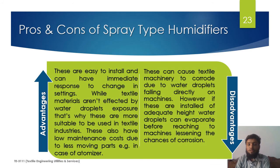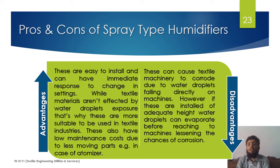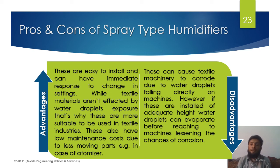Pros and cons of spray type humidifiers: the advantages are that they are easy to install, can change settings immediately, and have very low maintenance and operating costs. A major advantage is that textile materials are not affected by the water droplets, making them very suitable for textile units. The disadvantage is that they can cause corrosion to textile machinery composed of metals. However, if the devices are installed at adequate height, water droplets will convert into water vapor before reaching the machinery, protecting it.